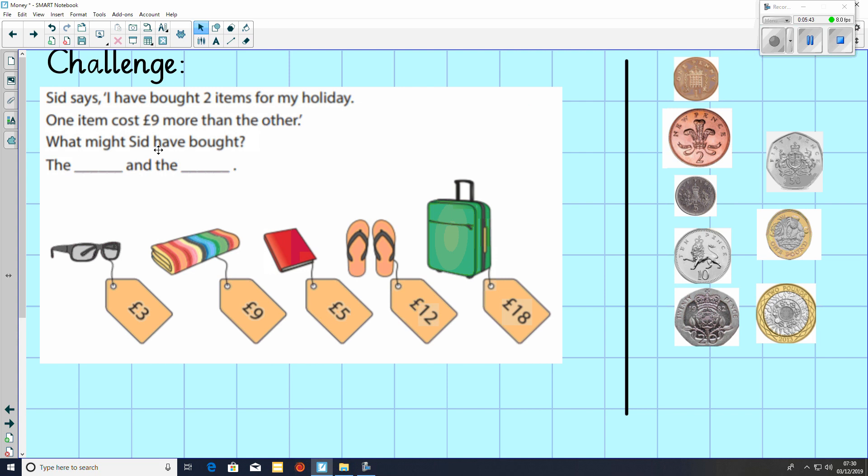And for the problem-solving question, it says, Sid says, I have bought two items for my holiday. One item costs £9 more than the other. What might Sid have bought? Pause the video here and have a go at working out which two items he could have bought for his holiday. Remember, they have to have a difference of £9.